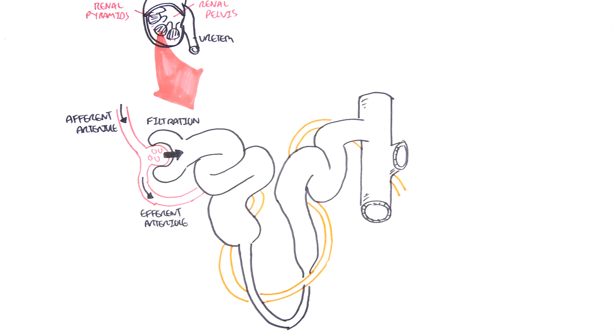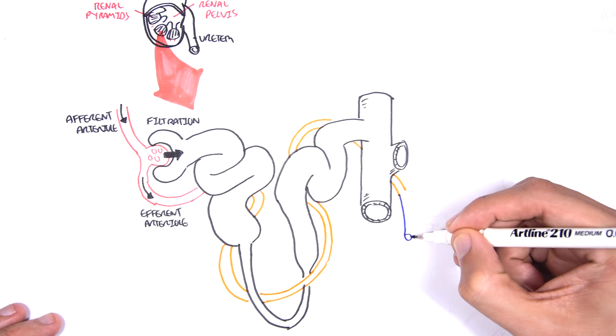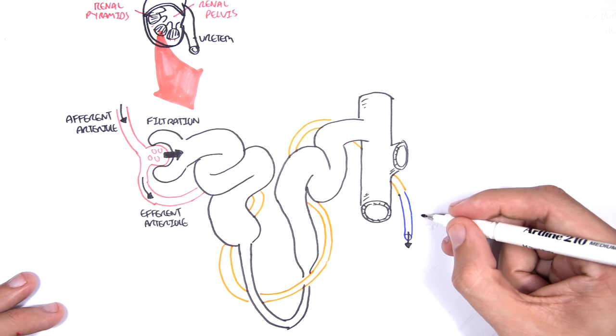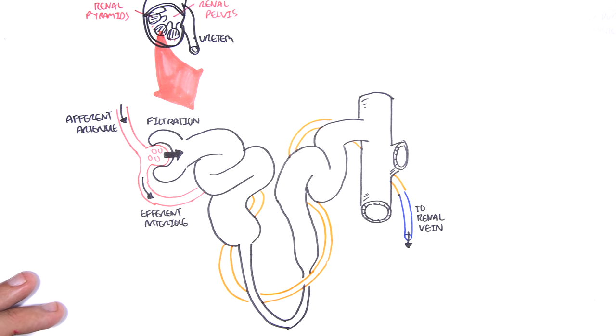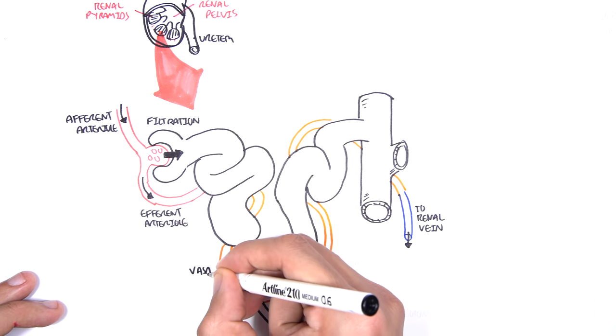As well, the vasa recta will secrete things that it doesn't need. It will secrete things from the blood back into the nephron as filtrate. The vasa recta will then leave and head towards and join with other veins and form essentially the renal vein.